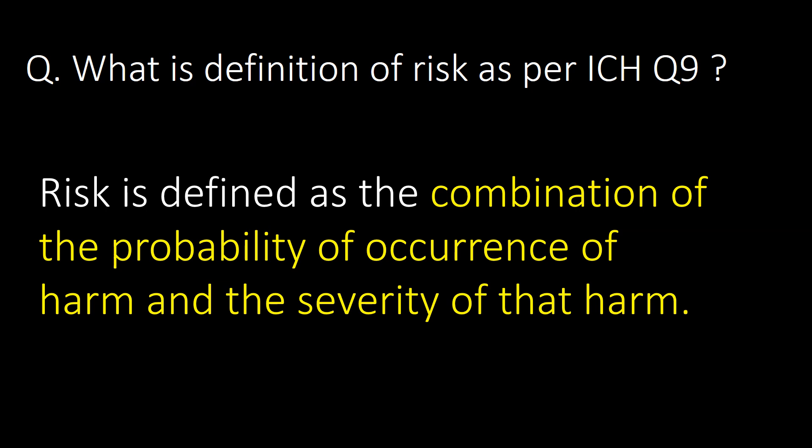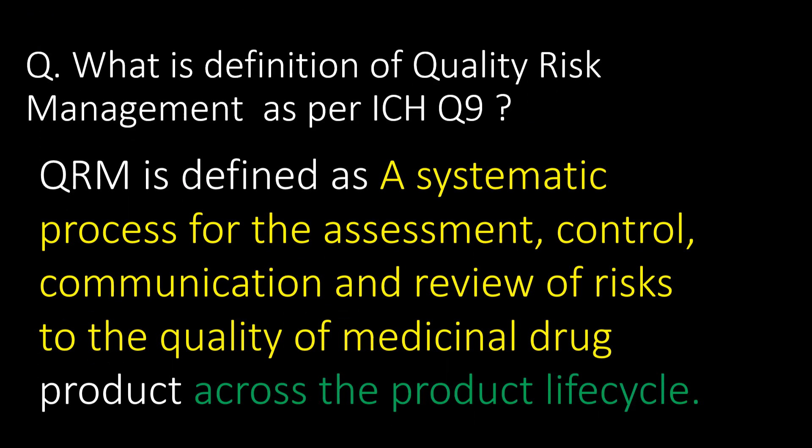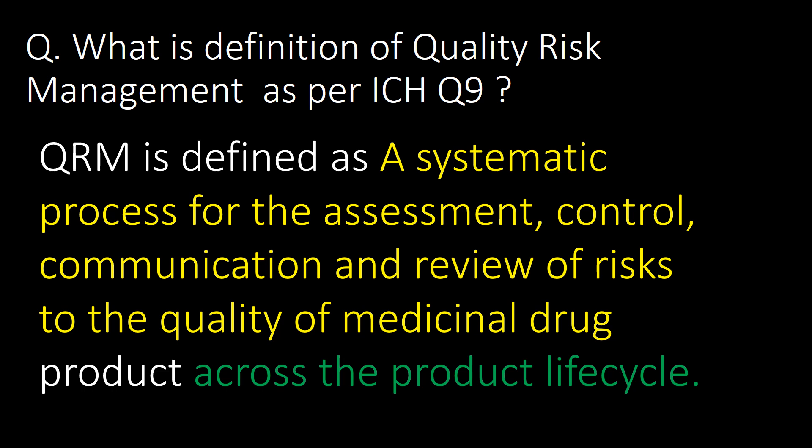What is the definition of risk as per ICH Q9? ICH Q9 defines risk as the combination of the probability of the occurrence of harm and the severity of that harm. What is the definition of quality risk management as per ICH Q9? QRM is defined as a systematic process for the assessment, control, communication, and review of the risk to the quality of a medicinal drug product across the product lifecycle.